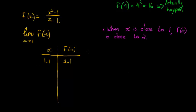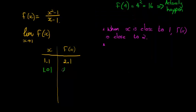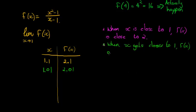So our first conclusion: when x is close to 1, f(x) is close to 2. Now let's see if when we get closer to 1, f(x) gets closer to 2. Let's try 1.01. Using our calculator: 1.01 squared minus 1, divided by (1.01 minus 1), is equal to 2.01. This is indeed true — when x gets closer to 1, f(x) gets closer to 2.